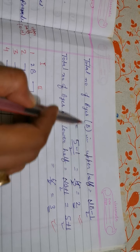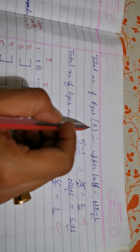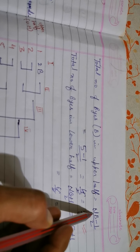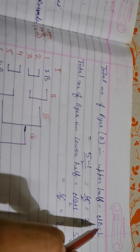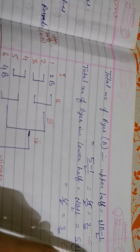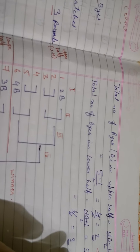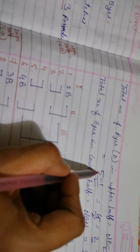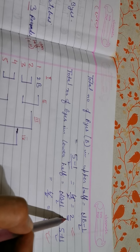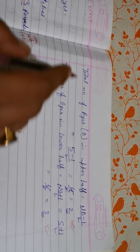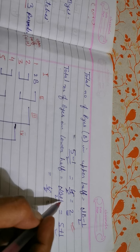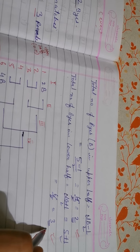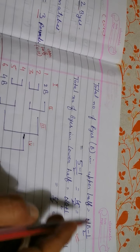Total byes in upper half: (NB−1)/2 = (5−1)/2 = 2 byes in upper half. Total byes in lower half: (NB+1)/2 = (5+1)/2 = 3 byes in lower half. So 3 byes will come in the lower half and 2 byes in the upper half.